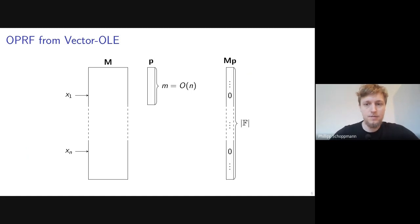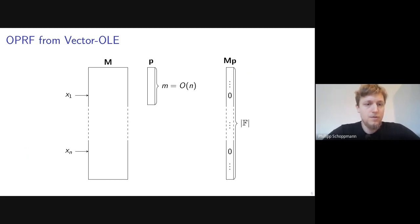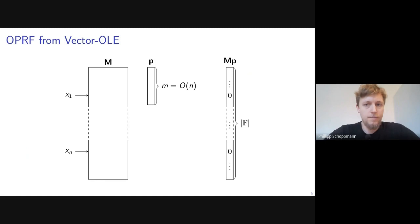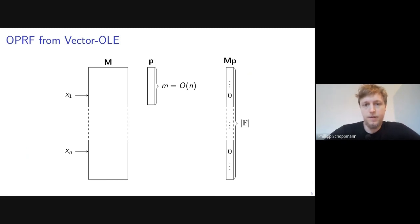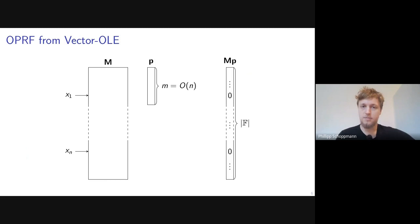Here on the left we have matrix M — very tall and cannot be represented in memory, but we can index it by Bob's input set. Bob selects the rows corresponding to his inputs, and we want the product of M and P to be zero at exactly those positions. This is achieved by taking the rows of M corresponding to the inputs and solving the linear system M·p = 0. We will see several approaches that make this linear system solving quite efficient.